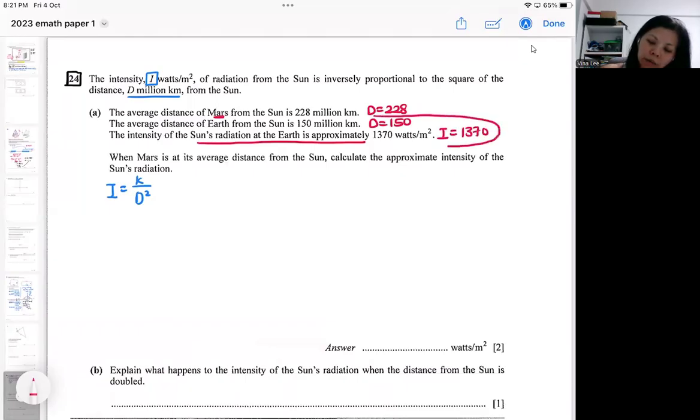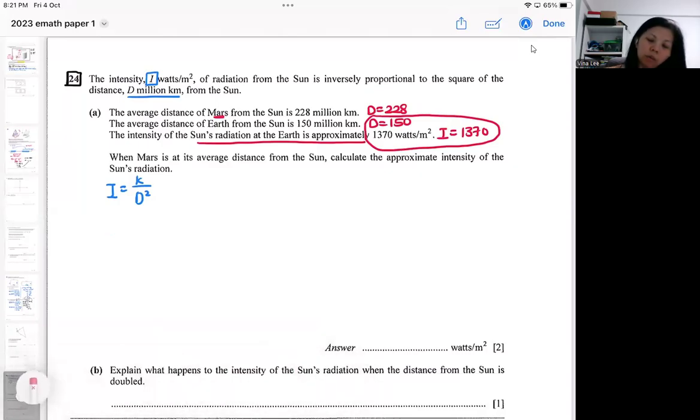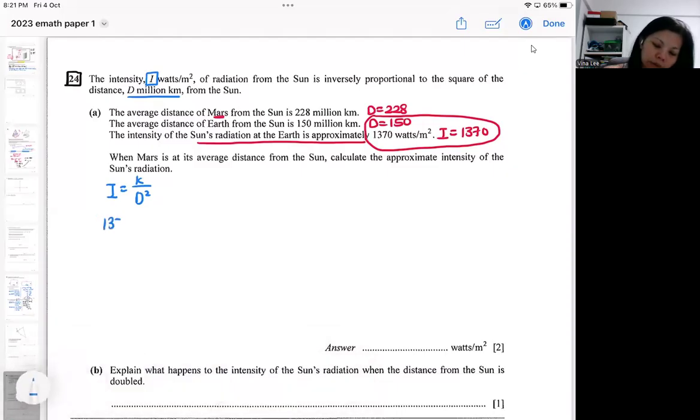So basically, if I have used this tool, I will be able to find my k. So if I use this tool, because these two are for the earth, you cannot be using the 228 and 1370 to find k. So in case some of you didn't read. So it should be 1370 equal to k over 150 squared. So you should get quite a big number.